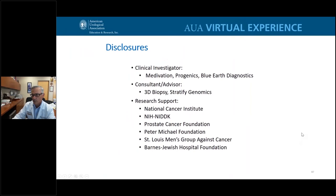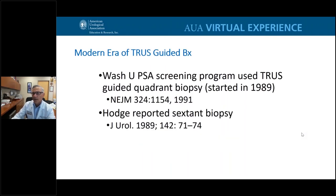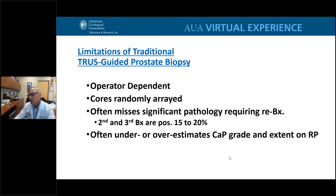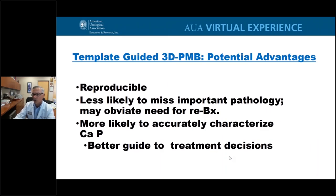Thank you very much. I really enjoyed Dr. Keibel's and Dr. D'Amico's talks. The modern era of ultrasound-guided biopsy started in the late 1980s. When PSA screening programs began, we did quadrant biopsies; then Hodge reported a sextant biopsy, which became the gold standard. But after 30 years of ultrasound-guided biopsies, we still don't know the optimum number of cores. We know it's operator-dependent, cores are randomly arrayed, a negative conventional biopsy requires a repeat biopsy, and even when cancer is found it may underestimate or overestimate the actual cancer burden in the prostate.